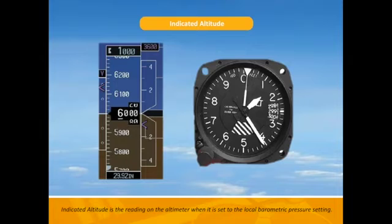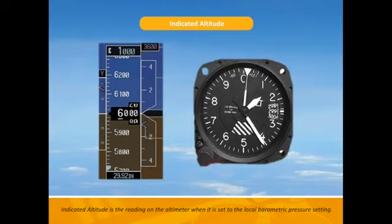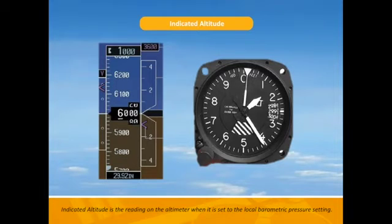Indicated altitude is the reading on your altimeter when it is set to the local barometric pressure setting. If you look close on these two examples, you will see on the left image at the bottom and in the window on the right image, 29.92. This number is the pressure setting. As we traverse through different airspace, air traffic control will continuously update us on local pressure settings. We ensure this number matches on our gauge. When the correct pressure is set on our gauge, not only are we reading the indicated altitude, but we are also reading the true altitude.